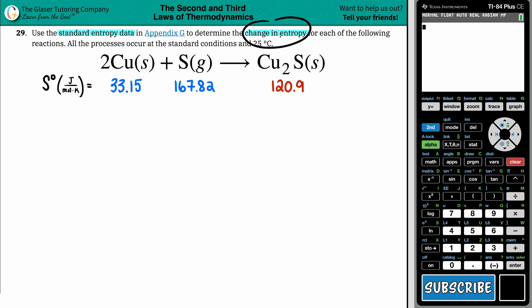Now we want to find that change in entropy. Change in entropy is a delta S. Delta is the triangle, that means change. S is entropy.